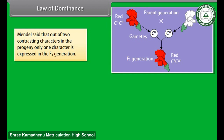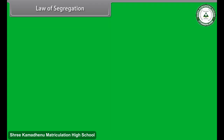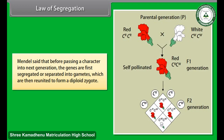Law of Dominance: Mendel said that out of two contrasting characters in the progeny, only one character is expressed in the F1 generation. The character which is expressed in the first generation — that is, tall — is called the dominant character, while the character which is not expressed in the first generation — that is, dwarf — is called the recessive character.